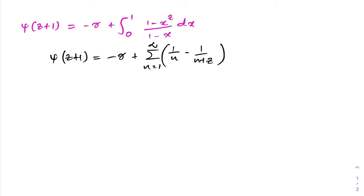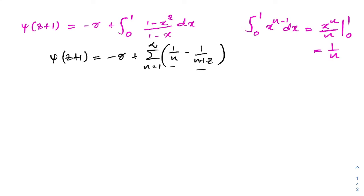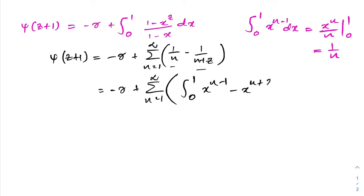Let's start. We have 1/n and 1/(n+c) in the series. If we integrate x^(n-1), the integral from 0 to 1 of x^(n-1) dx equals x^n / n evaluated from 0 to 1, which gives 1/n. Similarly, 1/(n+c) corresponds to the integral from 0 to 1 of x^(n+c-1) dx.